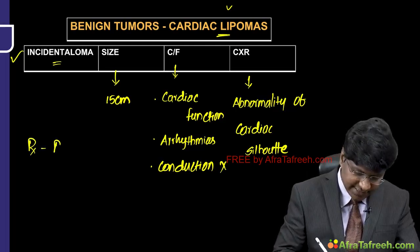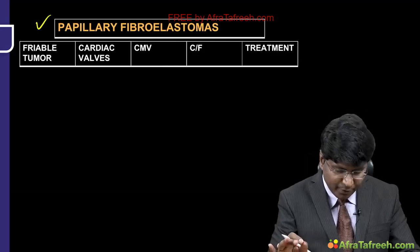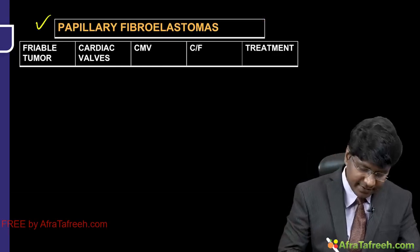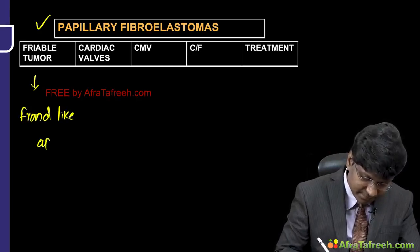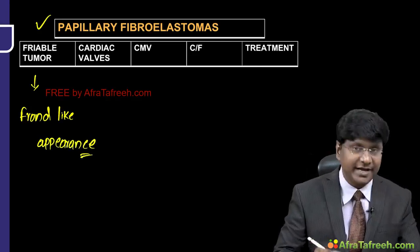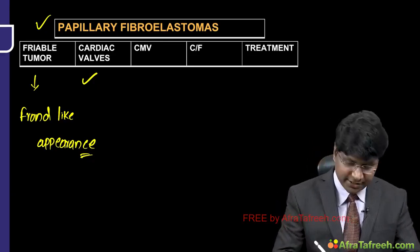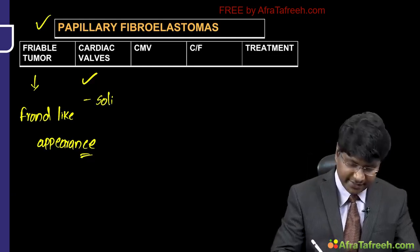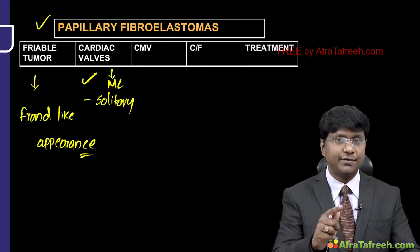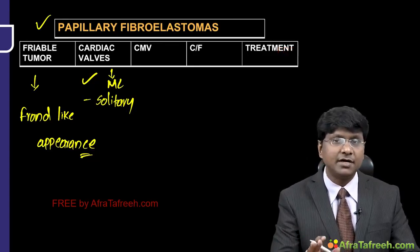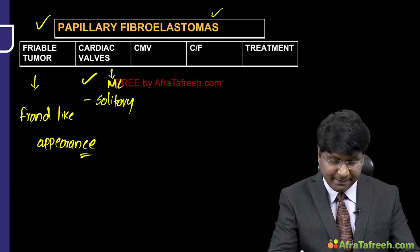Another important benign tumor is papillary fibroelastoma. These are highly friable tumors with a frond-like appearance. They originate from the cardiac valves as solitary tumors and are the most common benign tumors of the cardiac valves. Unlike atrial myxomas (originating from the interatrial septum), these tumors originate specifically from the cardiac valves.